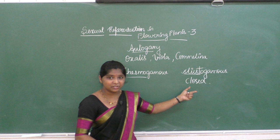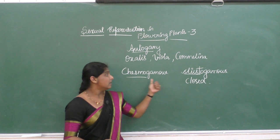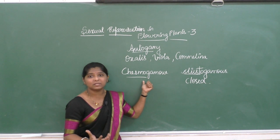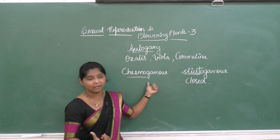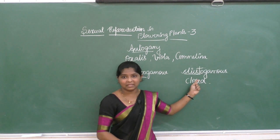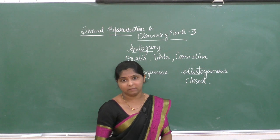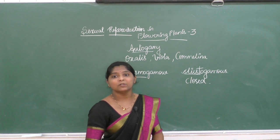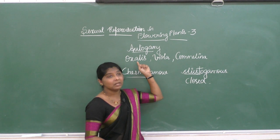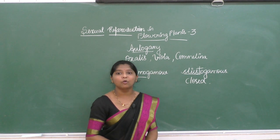In the last video there was a misunderstanding, please note: chasmogamous flowers have well-exposed anthers and stigma, while cleistogamous flowers do not open at all. Plants that produce two types of flowers — examples are Oxalis, Viola, and Comelina. Thank you.